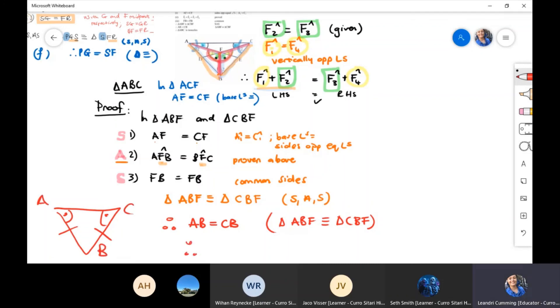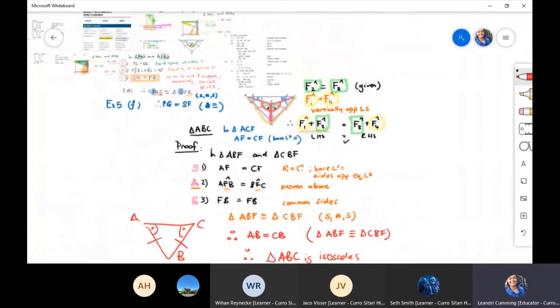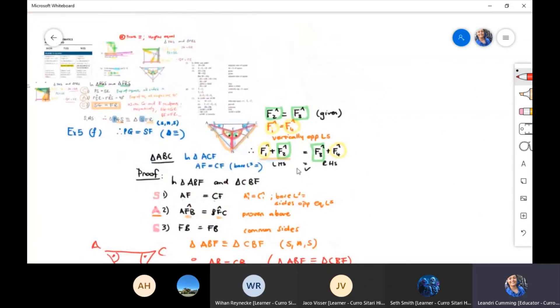And that wraps it up. Triangle ABC is isosceles. So hopefully that's made it clearer and you guys can use your memo just to check.